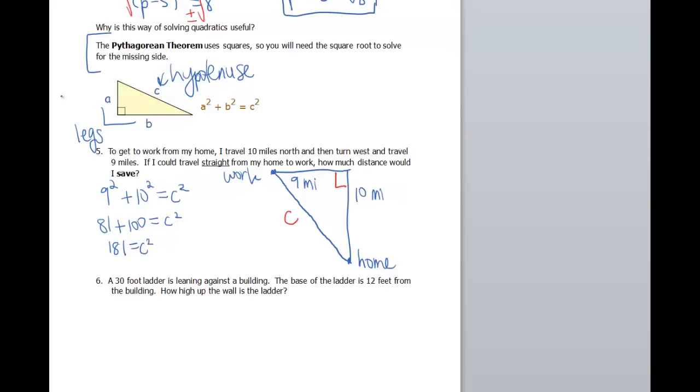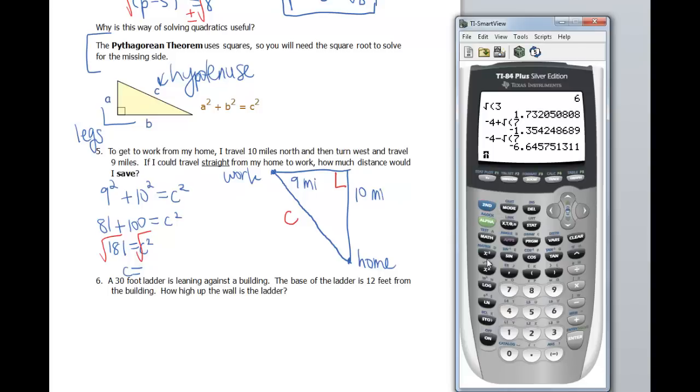Apply the square root. Now, I'm not gonna put a plus or minus on this one, because a negative distance doesn't make any sense. So C is going to equal, let's go to the calculator, the square root of 181. So that is approximately 13.45.